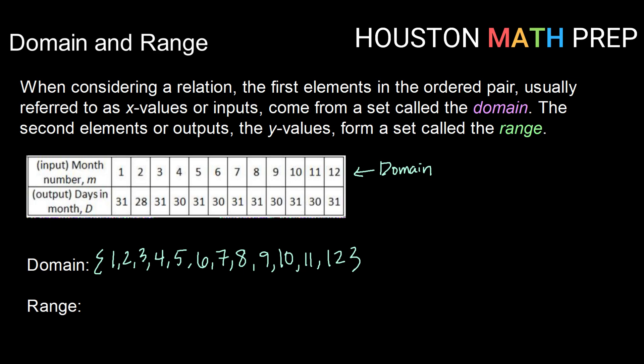When it comes to my range, that is the list of all possible output values. So when I look, I have a lot of repeating values here for month numbers because most of our months have either 30 or 31 days in them with the exception of February. So I want to list these out, but when I get to a repeated value, I don't need to list it again. It only needs to be in my list one time.